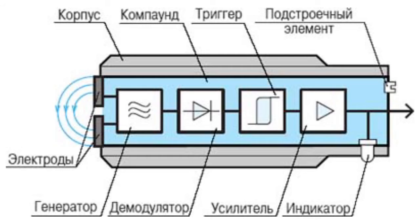The light-emitting diode indicates the condition of the switch, controls the efficiency and the adjustment of variability. The compound provides necessary protection from the penetration of water and solid particles. The frame secures the mounting of the switch, protecting it from mechanical damage. The frame is made of brass or polyamide, and is replenished with hardware.